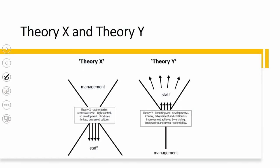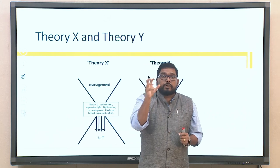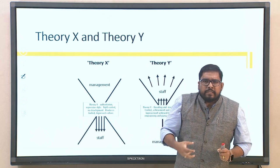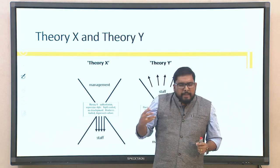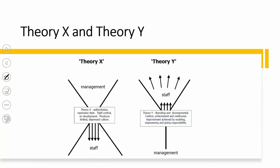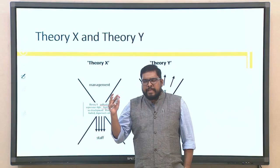Another important theory was given by Douglas McGregor in 1960: Theory X and Theory Y. Theory X assumes that individuals are inherently lazy, disobedient, and disoriented, so there is always a need for pressure and discipline to be enforced on them. It requires a level of coerciveness and does not consider individuals as naturally hardworking.